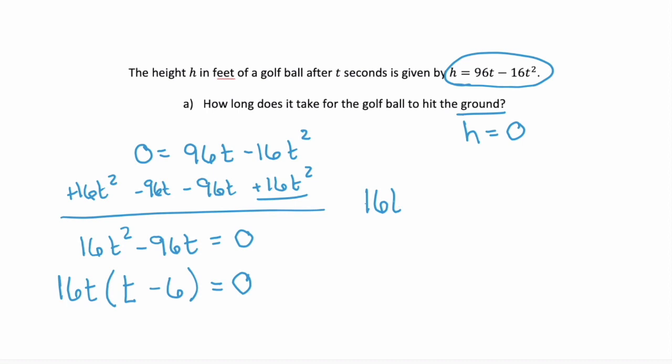So 16t equals 0, that's our first factor, or t minus 6 equals 0. Solving 16t equals 0, we divide by 16 on both sides, and we get t equals 0.